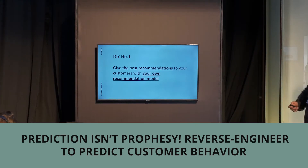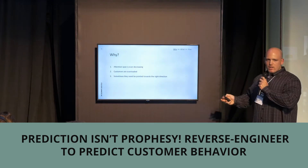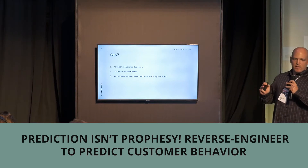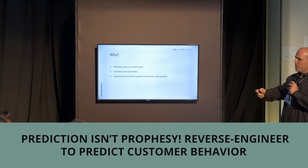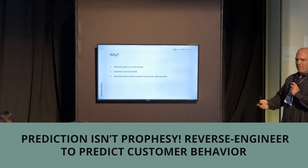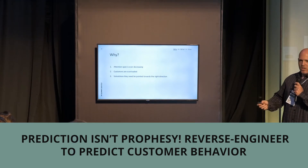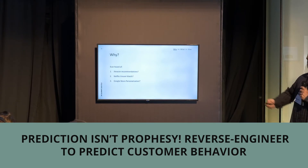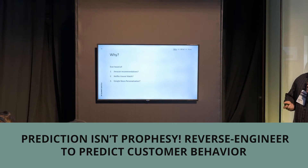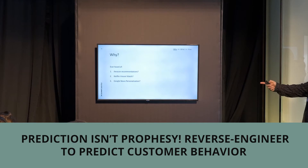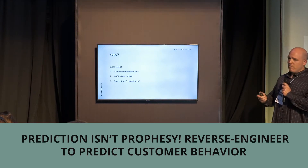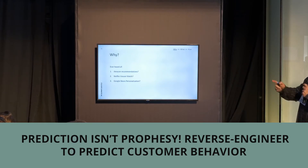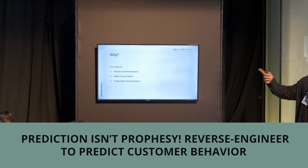Why do we need a recommendation model? Today the customer's attention span is ever decreasing. Customers are overloaded with tons of information daily and sometimes only need to be pointed in the right direction to make a decision. With Amazon, 35% of their sales come from their site's recommendations. Netflix had the most famous contest — a one million dollar prize for the best recommendation model. And with Google News, there is a 40% higher click-through rate for articles coming from their recommendation model. We can definitely see there is value to smarter recommendations.